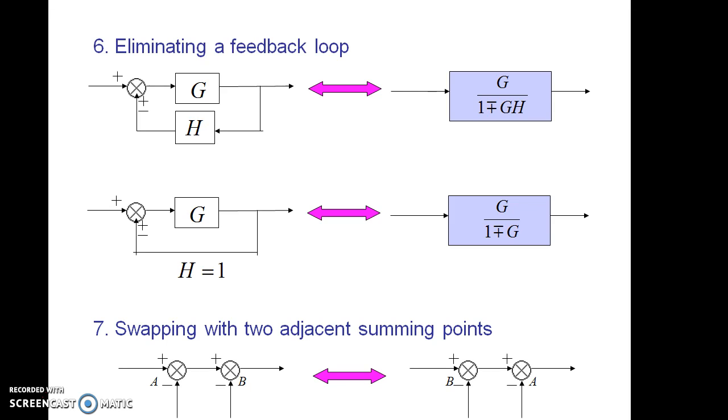The sixth rule is eliminating a feedback loop. Normally for a feedback loop, the transfer function is forward path gain divided by 1 minus or plus forward path gain into feedback path gain, that is G by 1 minus or plus GH. So if simply a single block with this transfer function is included, that is sufficient for a feedback loop. The second diagram is also the same in which only the feedback path factor is taken as 1.